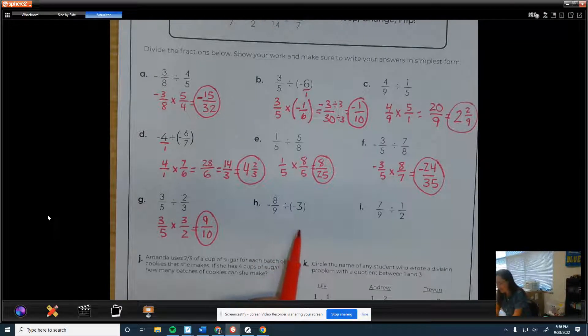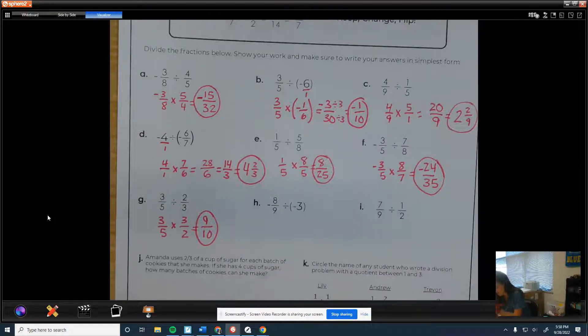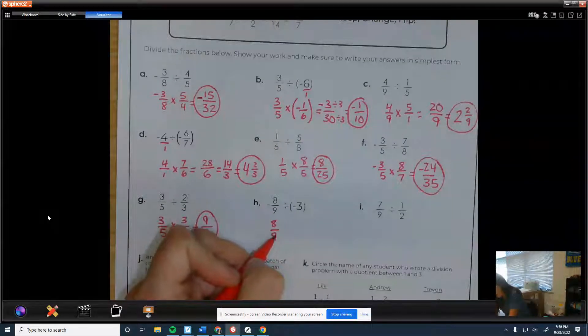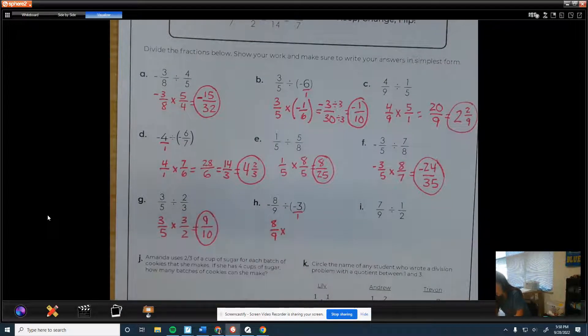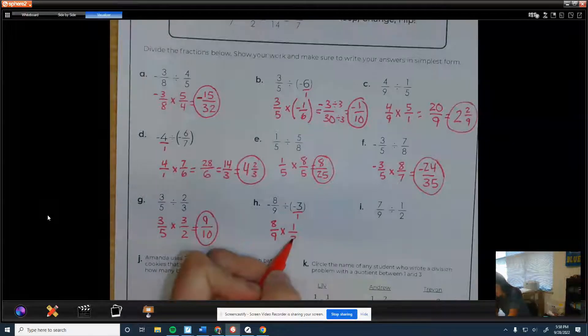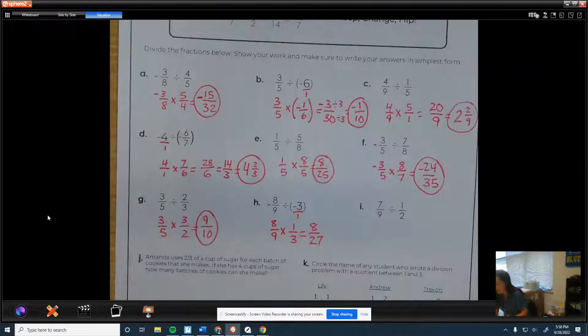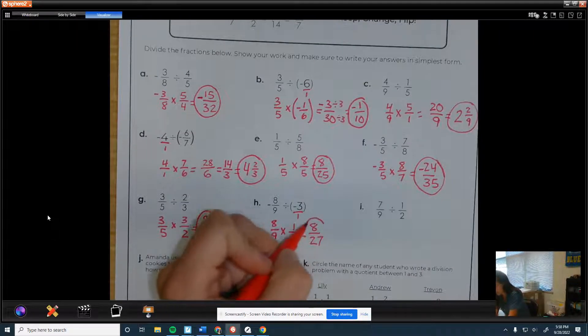Next one's a negative divided by negative. So I'll just pretend like they're all positive. So keep, change, stick a one under it, flip. That's 1/3. So that would be 8/27. And that cannot be simplified.